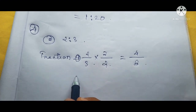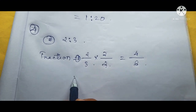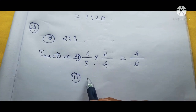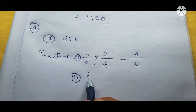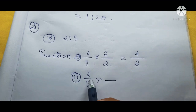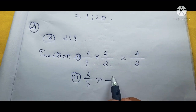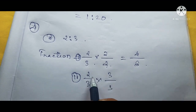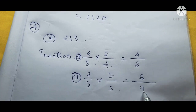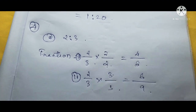For the second equivalent ratio, we use the fraction 2 by 3 and multiply by 3: numerator becomes 2×3 = 6, denominator becomes 3×3 = 9. So the two equivalent ratios of 2 is to 3 are 4 is to 6 and 6 is to 9.